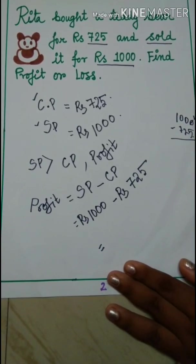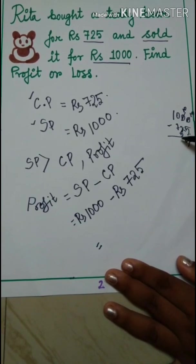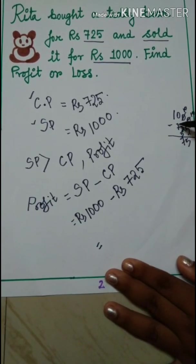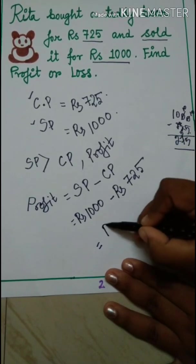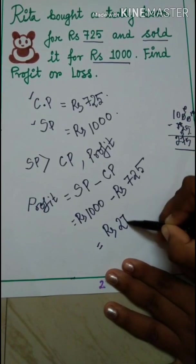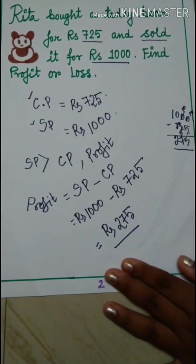1000 minus 725. 5 it becomes 10, 5. 2 becomes 3, 10 it becomes 7. 7 becomes 8, 2. So 275. So Rs 275 was profit of Rita.